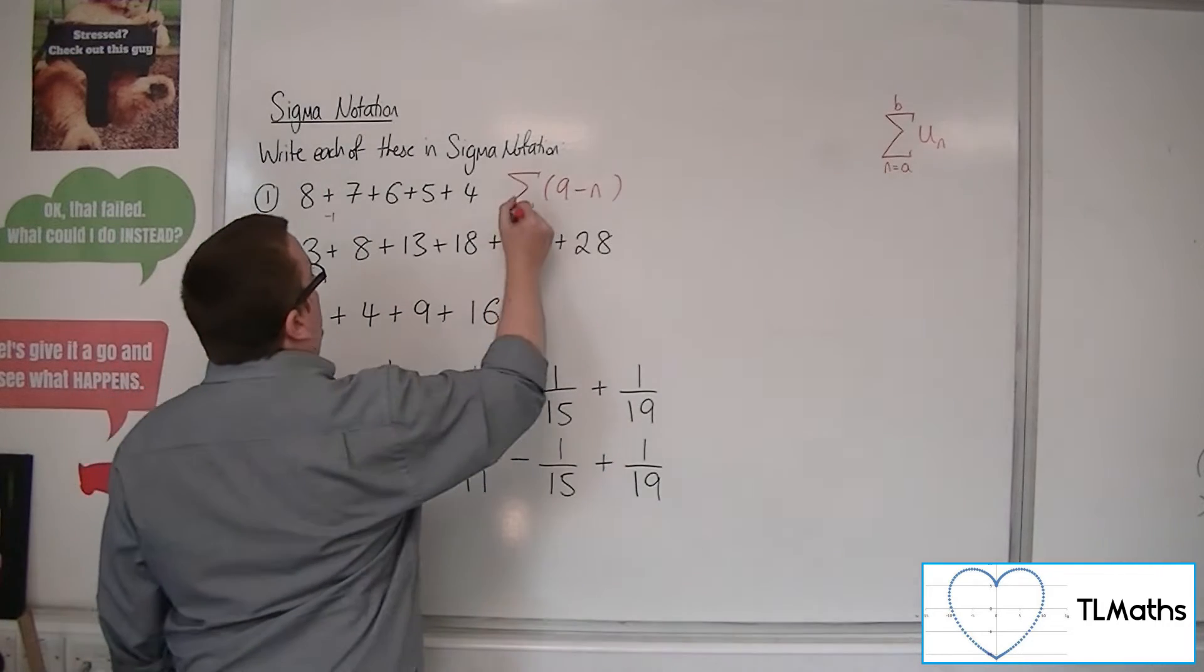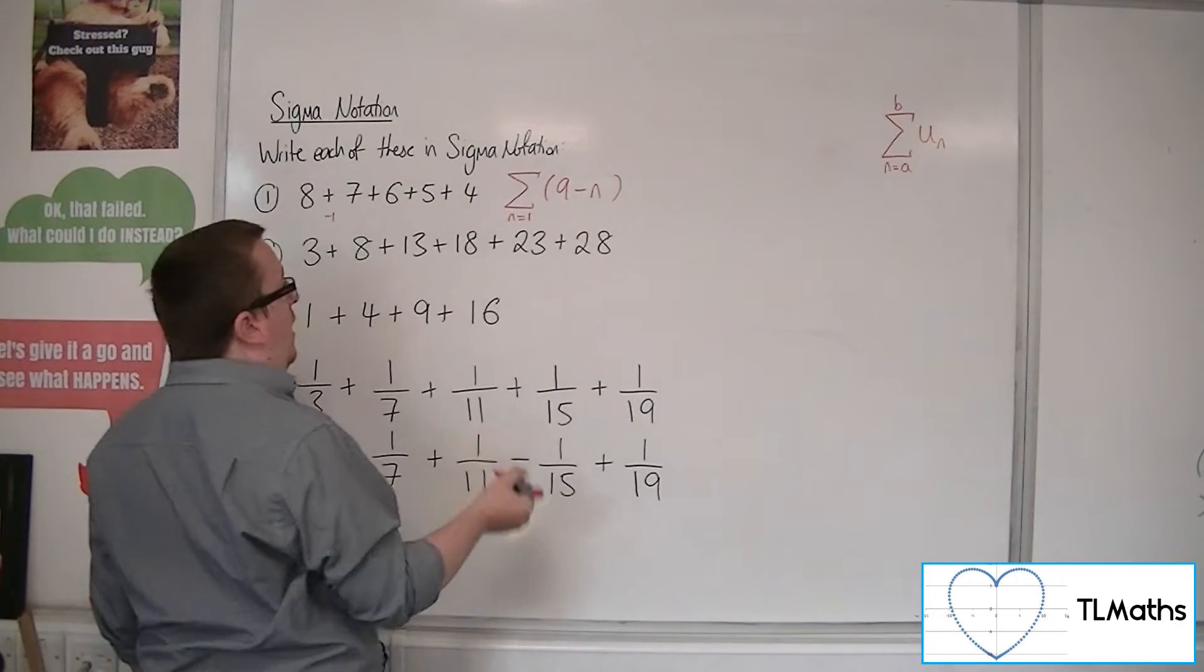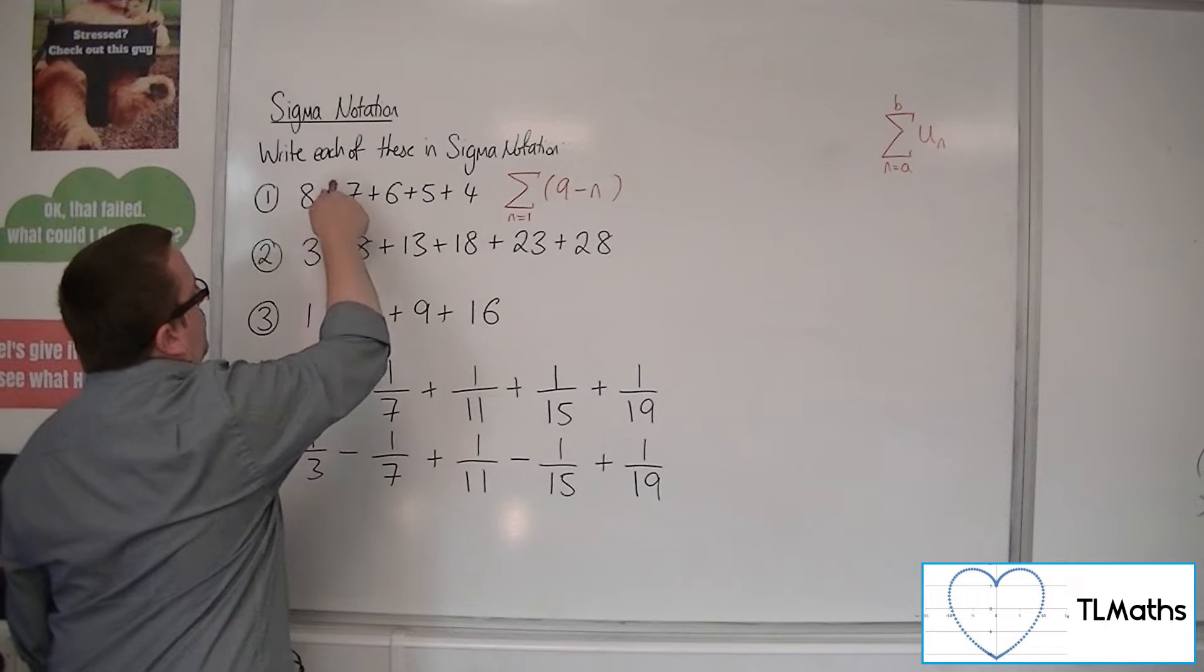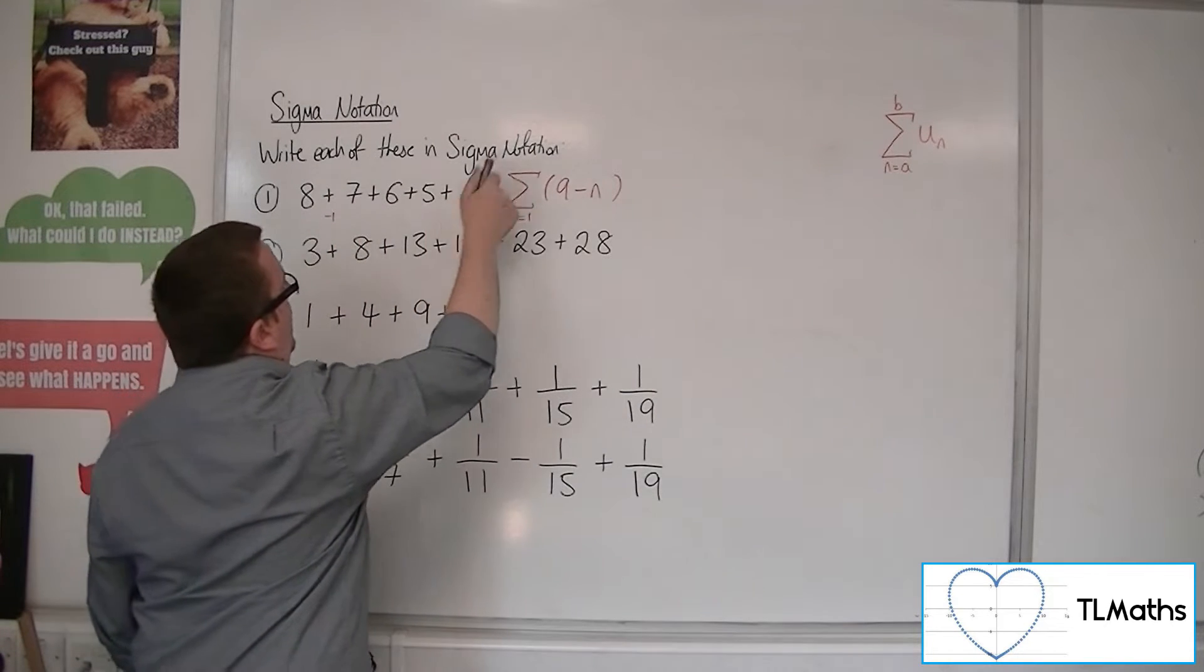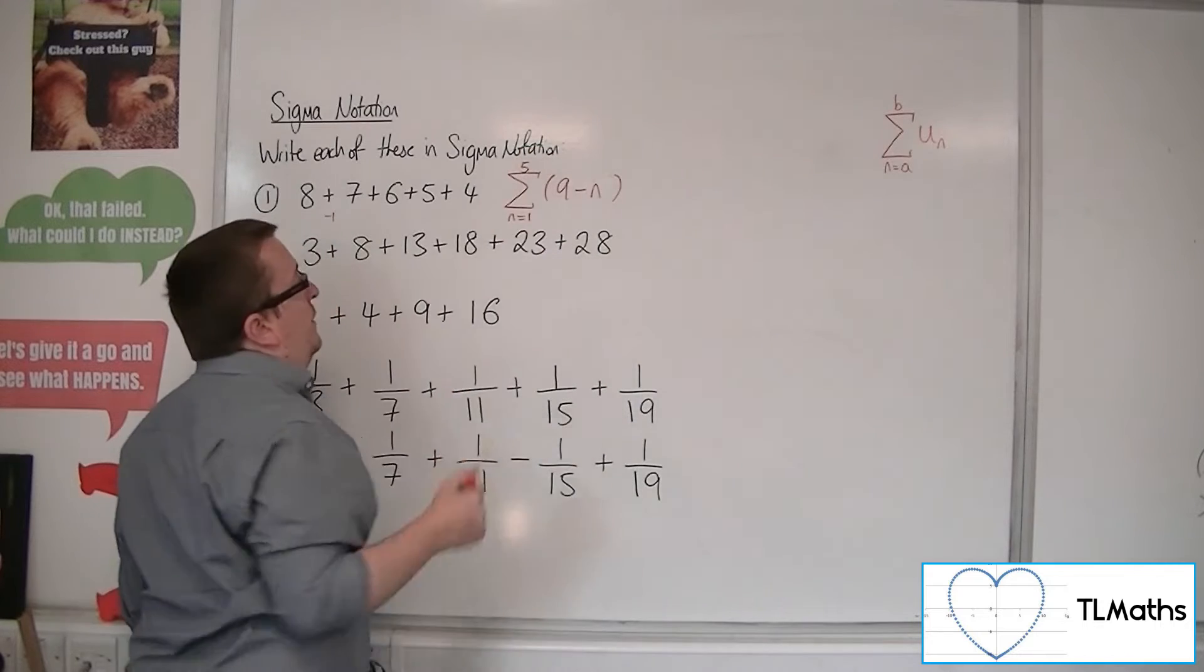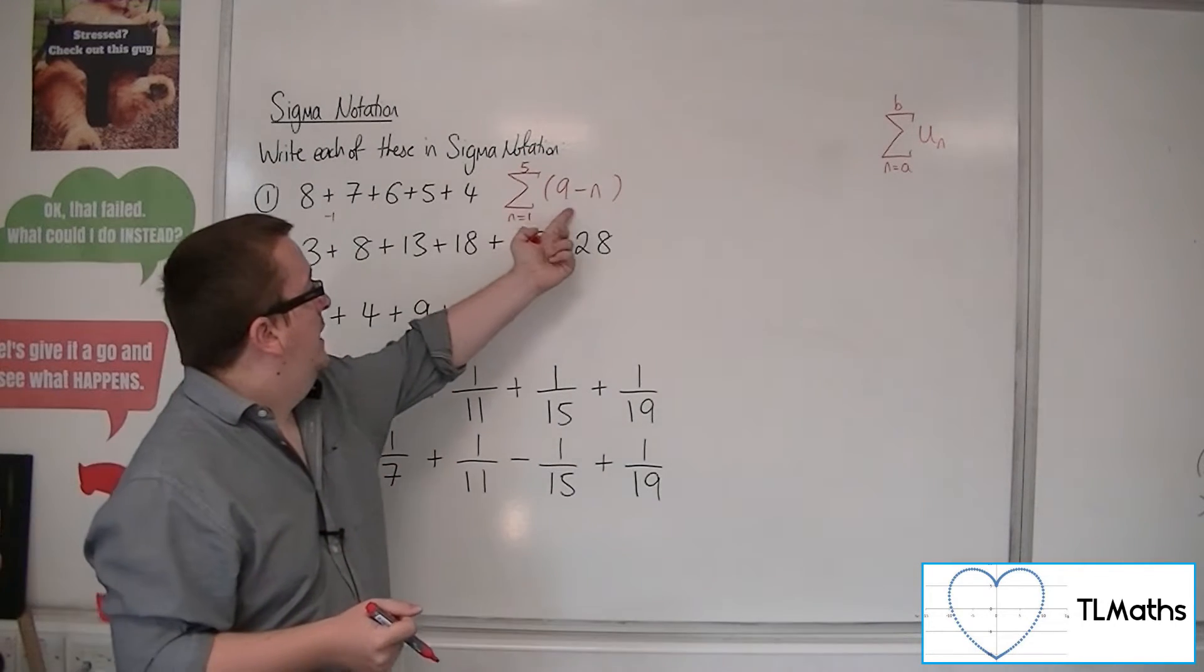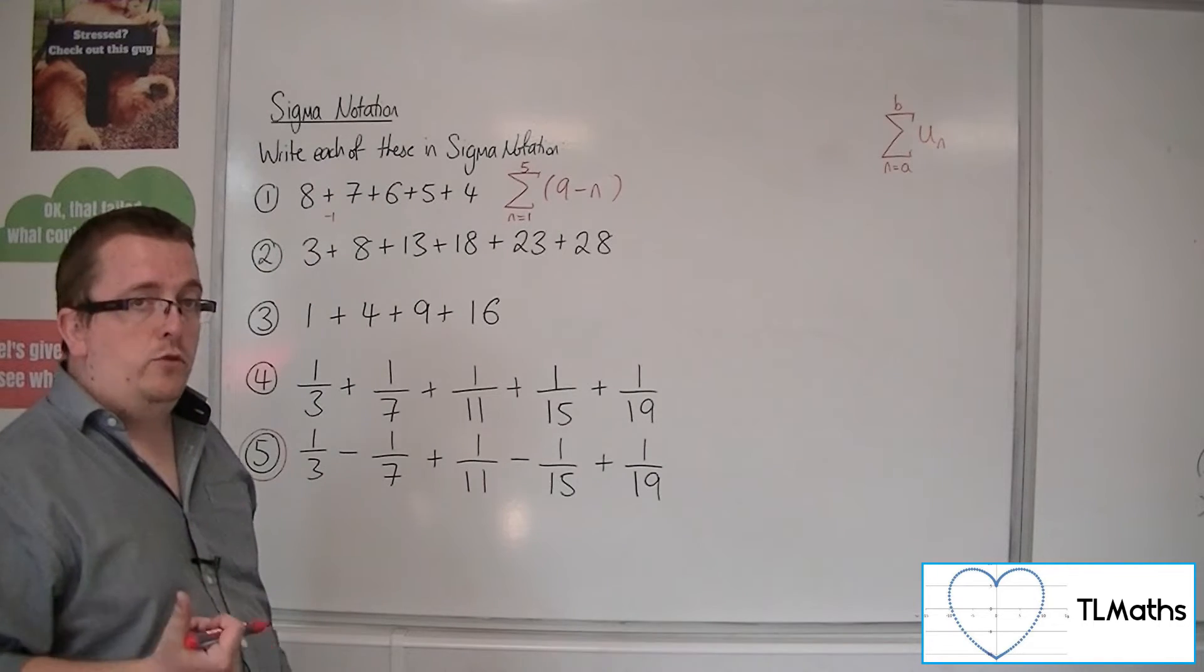Now where are we starting? Well, we're going from n is 1, because that's the first term that gets me the 8. And then I'm going 1, 2, 3, 4, 5, going up to the 5th term. And so that is the succinct way of writing that series.